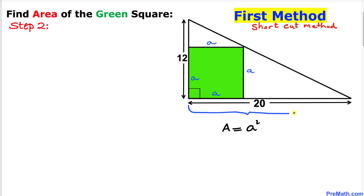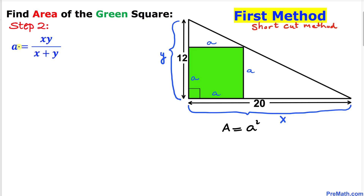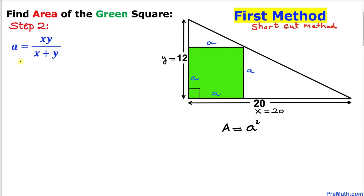Let me call the horizontal side of this triangle x and the vertical side y. The shortcut formula for the side length a is: a equals x times y divided by x plus y, where x equals 20 and y equals 12. Let's fill in the values: a equals 20 times 12 divided by 20 plus 12.